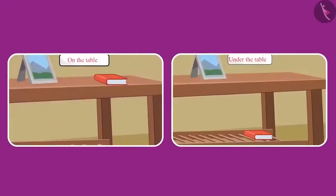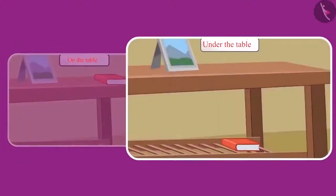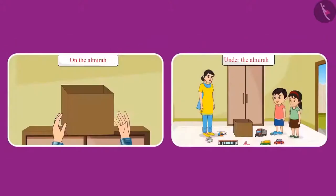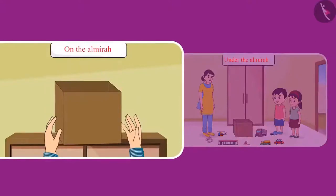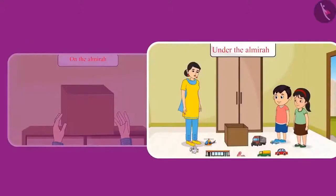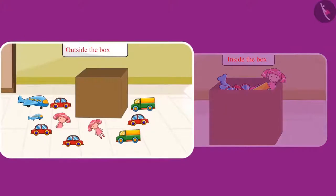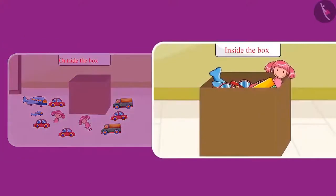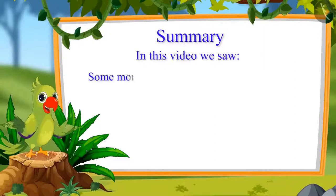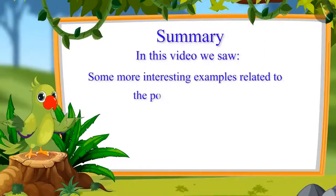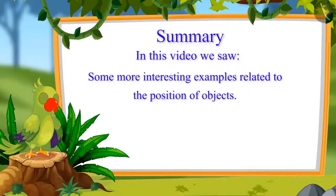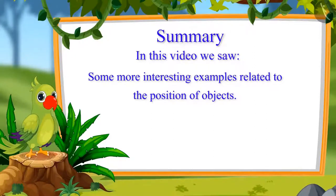Like picking up the notebook from the table and placing it under the table. And the toy box was on top of the almira — Chotu's mother took it from there and kept it down. Even Chotu and Pinky picked all the toys which were lying outside the box and kept them inside the box. In this video, we saw some more interesting examples related to the position of objects like on, under, inside, and outside.